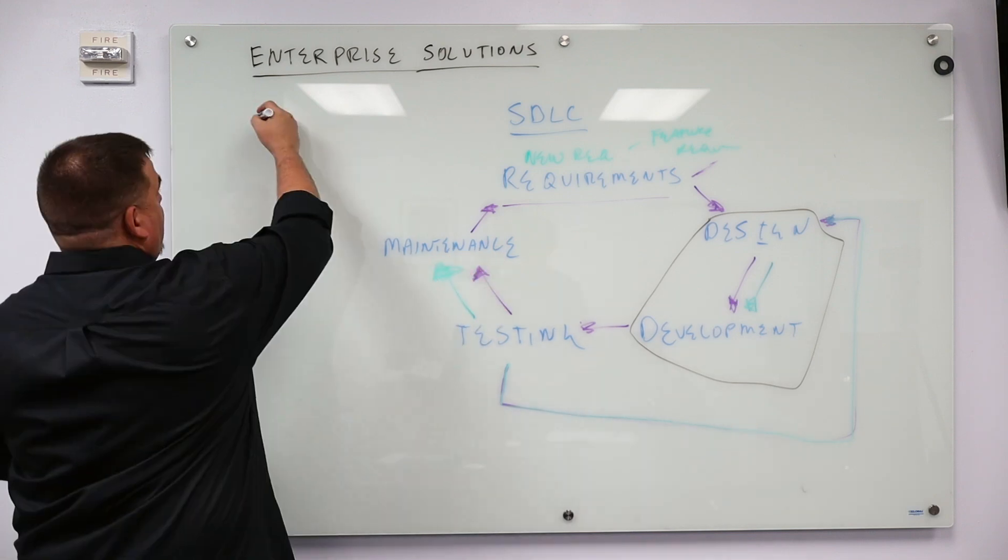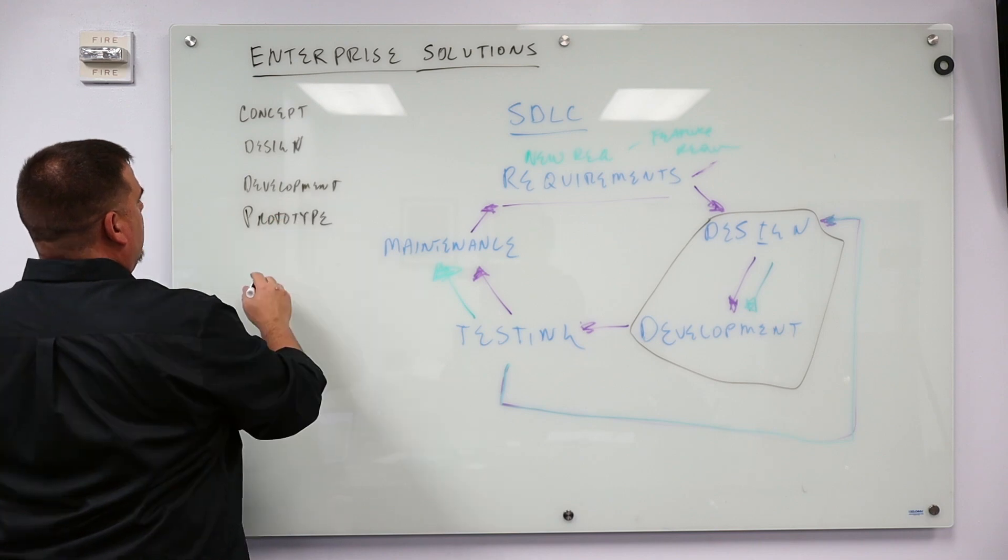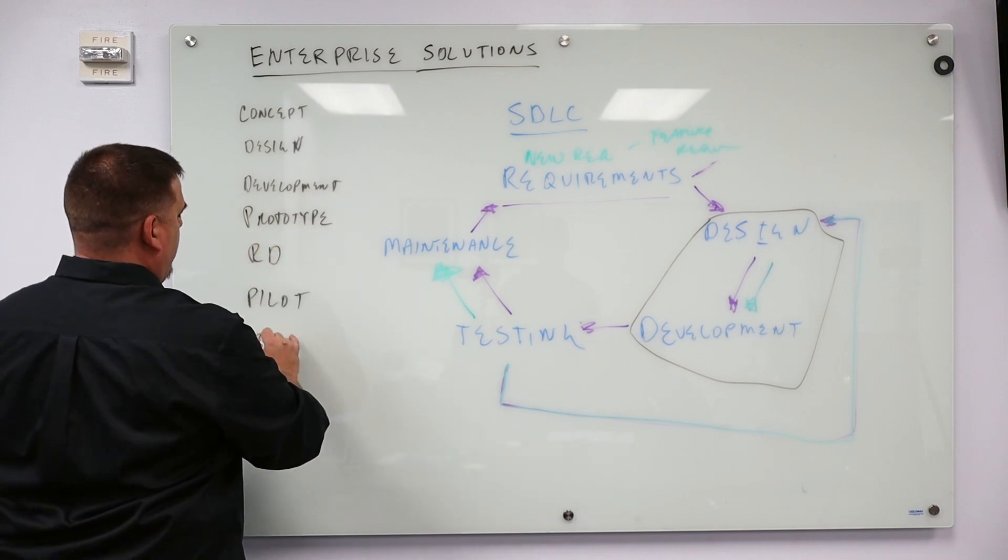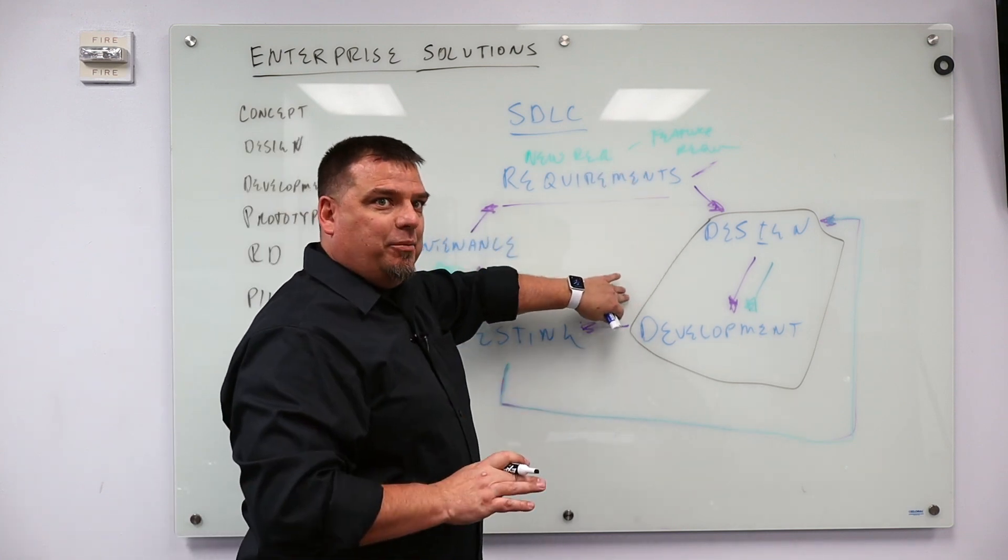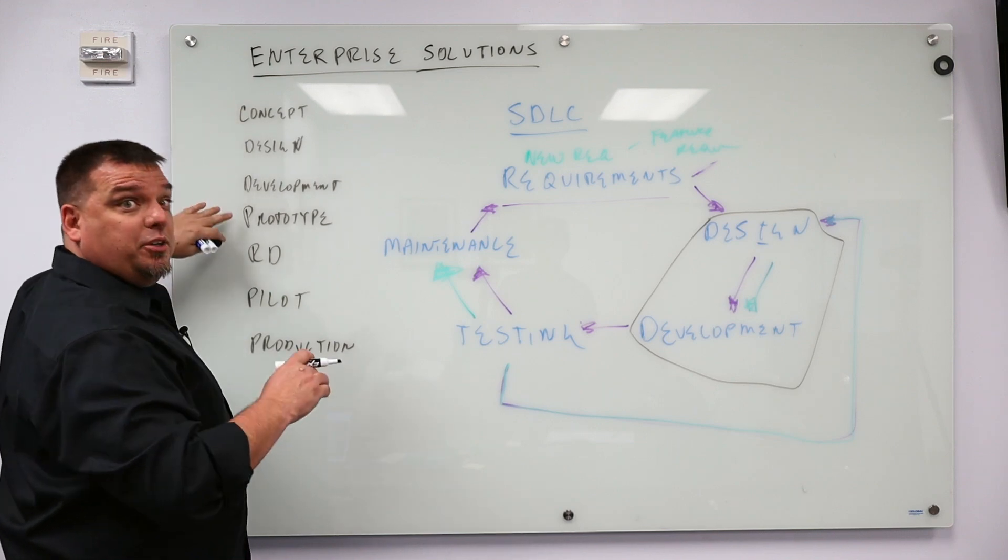Designing and developing is really concept design, development of a prototype, more development or what we call redesign, then pilot, and then production. So in the software development cycle, we have design and development, but really what they are is concept design development and building a prototype,